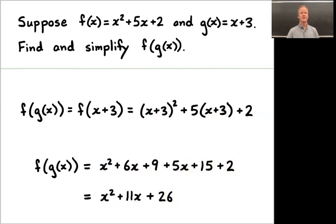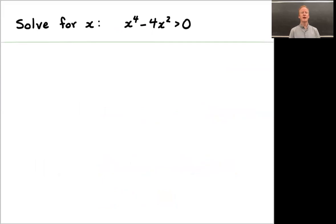Let's move on to problem number 2. Solve for x if x to the 4th minus 4x squared is greater than 0. I'll give you a moment to work on that. Press pause and then come back.